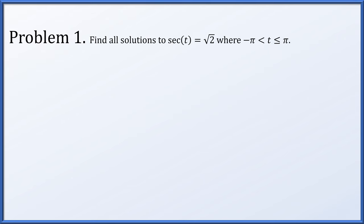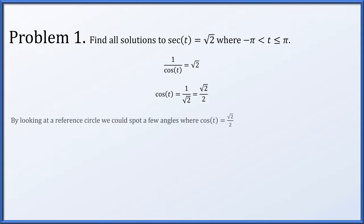We'll begin by finding all solutions to the equation secant of t equals root 2, where t is restricted to be between minus pi and pi — it may equal pi but not minus pi. Since secant of t is simply 1 over cosine, we reciprocate to get cosine of t equals 1 over root 2, also written as root 2 over 2.